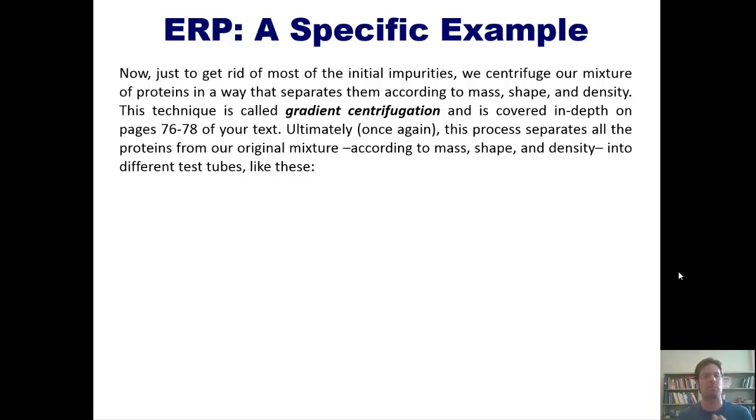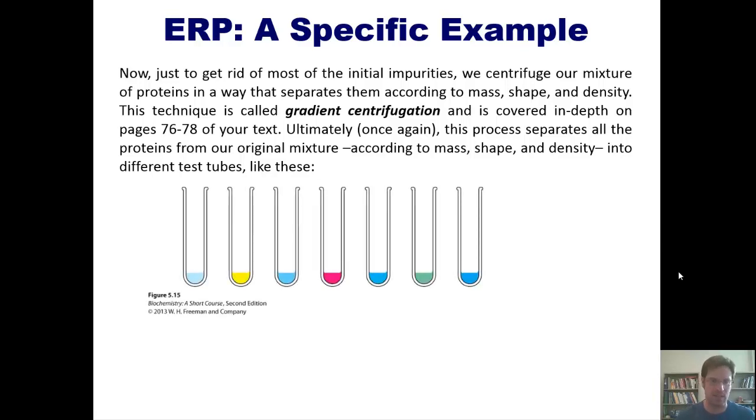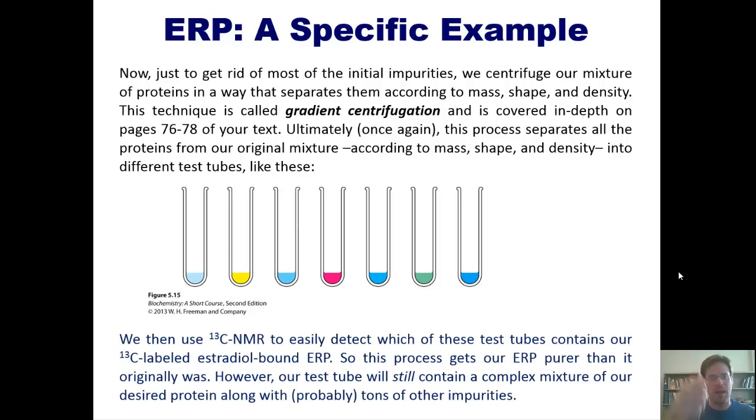Ultimately, once again, this process separates the proteins from our original mixture, according to mass, shape, and density, into different test tubes like these. At this point, then, we'll just take a small amount out of each of these test tubes separately and then do carbon-13 NMR analysis with them. If we see any peak coming from any of these samples, that indicates the presence of carbon-13 labeled estradiol. Now, because we've washed away in the process of gradient centrifugation all of the free estradiol that might be around, the only estradiol that can be left has to be estradiol that is bound to ERP, which means that in that particular test tube or test tubes, there is ERP present, bound, of course, to C-13 labeled estradiol.